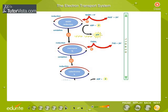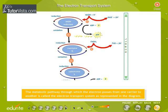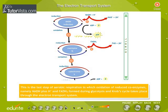The metabolic pathway through which the electron passes from one carrier to another is called the electron transport system. As represented in the diagram, this is the last step of aerobic respiration, in which oxidation of reduced coenzymes — namely NADH+H⁺ and FADH₂ — formed during glycolysis and Krebs cycle takes place through the electron transport system.